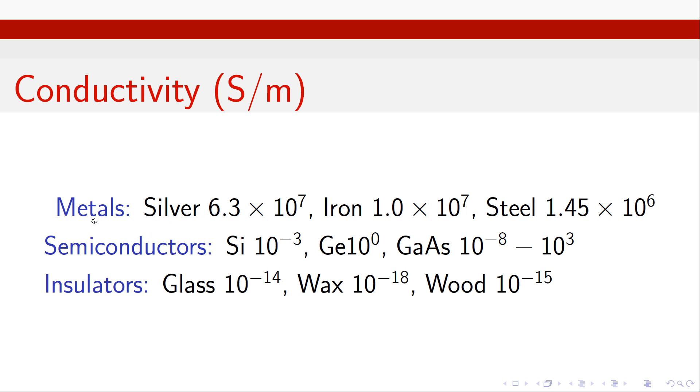And we've got here just a couple of examples. So you can see for metals, the conductivity is in the region of 10 to the plus 7. For insulators, it's 10 to the minus 14 to 10 to the minus 18. The semiconductors, we get something in between. But have a look here. We've got silicon, germanium and gallium arsenide. And for the gallium arsenide, it ranges from 10 to the minus 8 to 10 to the 3.